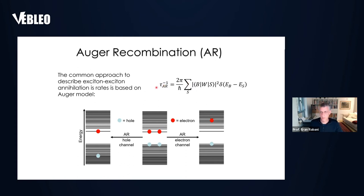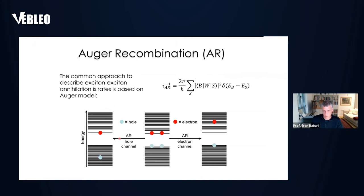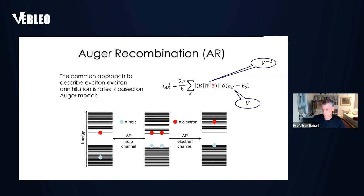Auger physics is simply an approach to calculate this for confined structures — confined because I'm drawing these energy levels as discrete rather than continuous, which is what you obtain in a bulk material. Now, if we think about the scaling of these processes, we find that the Auger rate scales with the size of the confined structure as characterized by its volume. The final density of electron states, which enters the golden rule formula, scales linearly with the volume of the particle: the bigger the volume, the more states available.